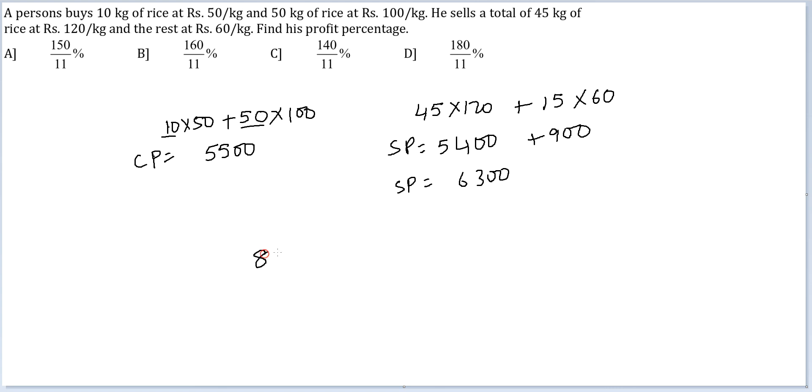Finally, we are supposed to find his profit percentage. So it will be 800 by 5500 into 100. Cancel and cancel. 5 goes, it goes 11, it goes 20. 20 into 8. 160 by 11.